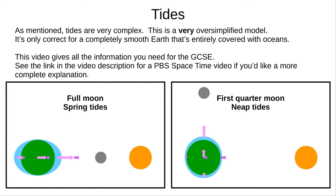This is the explanation you need for GCSE astronomy. In the real world, tides are incredibly complex. This model is only correct for a completely smooth planet, entirely covered by ocean. If you're interested, I've linked to an excellent PBS Space Time video, that gives you a more complete explanation.